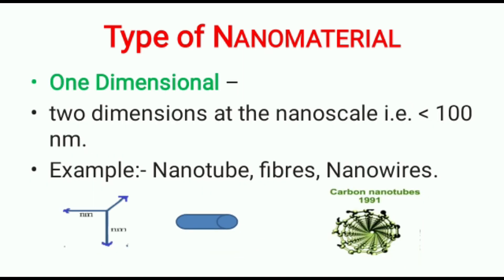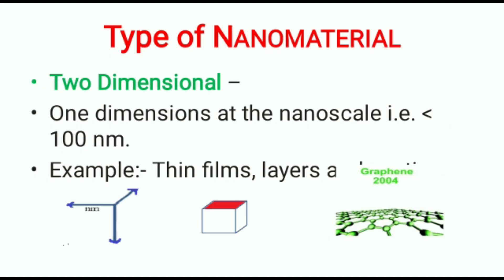Next is one-dimensional: when two dimensions are at the nanoscale — that is, length or breadth — and the other dimension is at the microscale, it is known as one-dimensional. Examples are nanotubes, fibers, or nanowires. In the given images you can see length and breadth in the nanoscale range and other dimensions in the microscale range. An example is carbon nanotube.